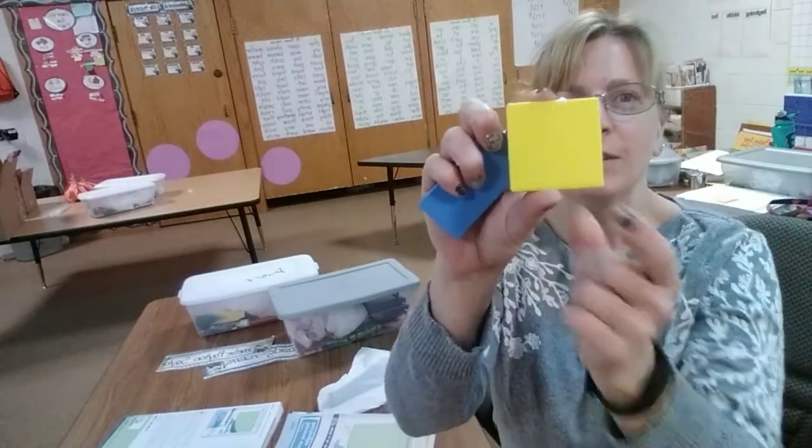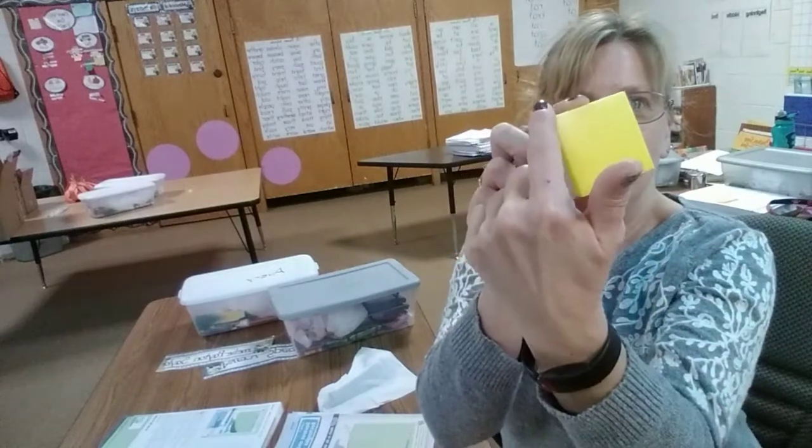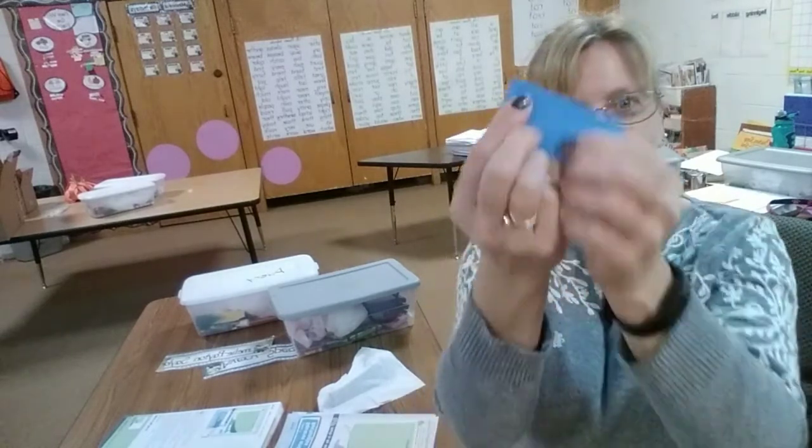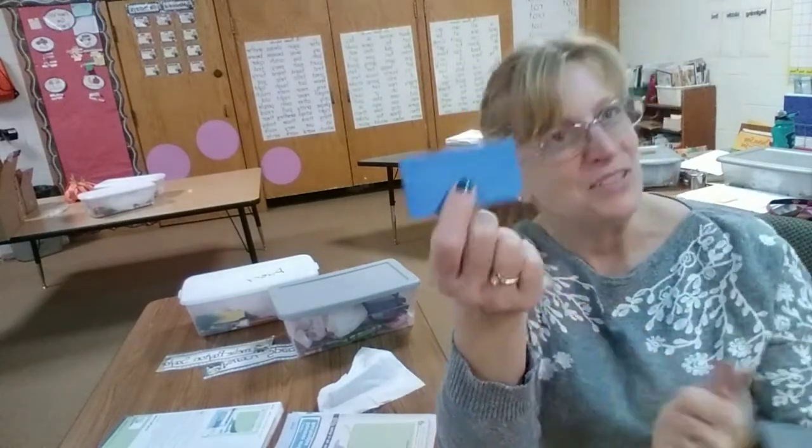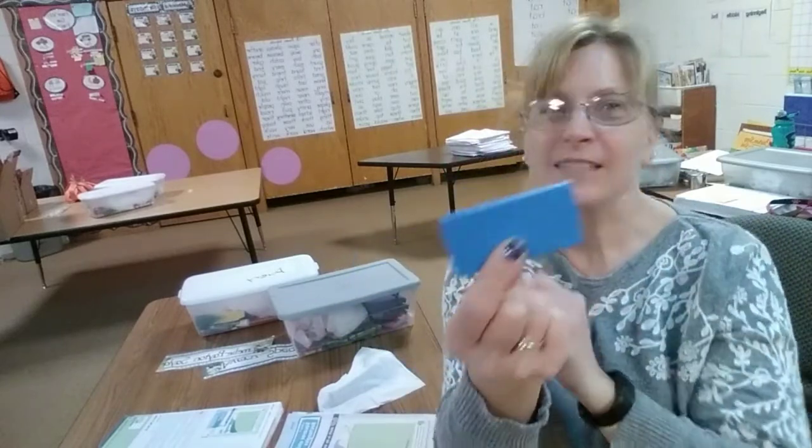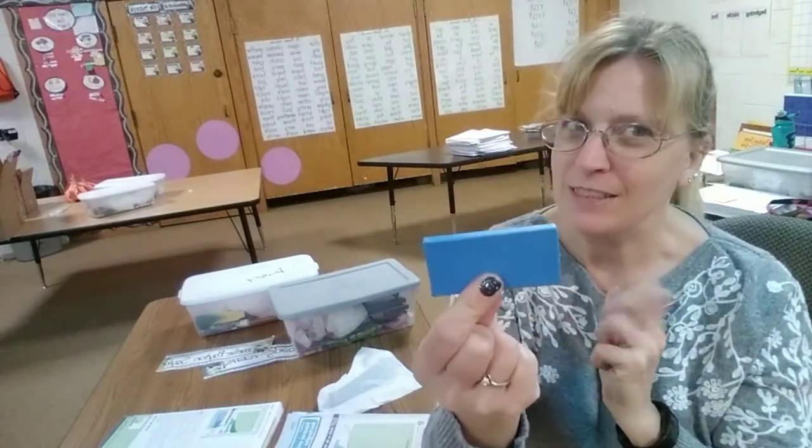How many vertices does a square have? Well, let's count. One, two, three, four. Nice. And a rectangle? That's right, the same. Four vertices. Everybody say? Four vertices. Nice.